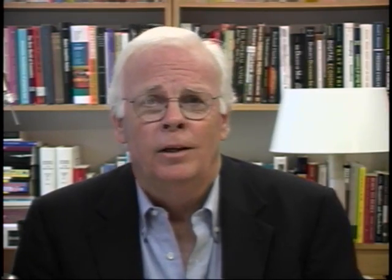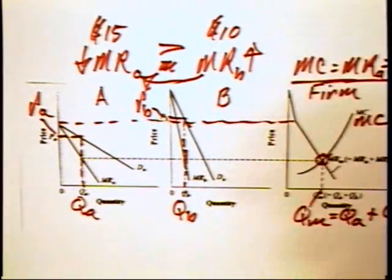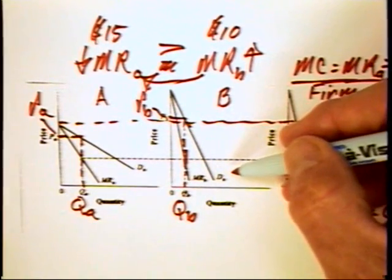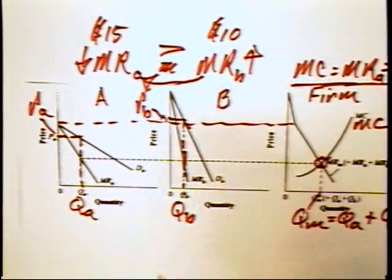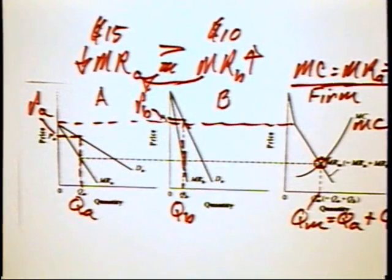Textbook prices in the United States are sometimes 50% higher than in the United Kingdom. One reason is that the elasticity of demand for textbooks in the US is represented by market B, while demand in Great Britain is represented by market A. Of course, these markets must be kept separate — if the producer can't keep them separate, people who can buy at a lower price in one market will start reselling those books in another.